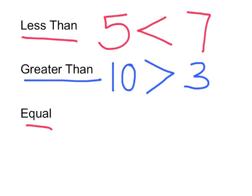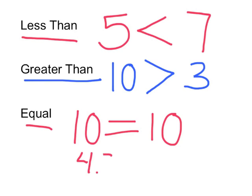And the last one should be pretty easy, the equal sign, meaning that they are exactly equal. So ten is equal to ten, or 4.5 is exactly equal to four and a half.